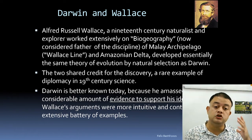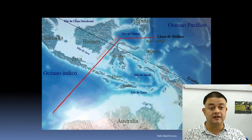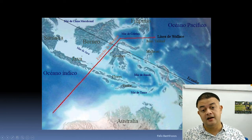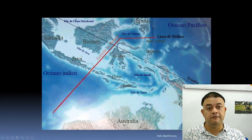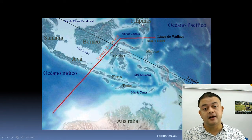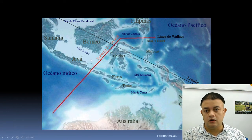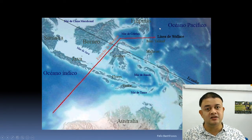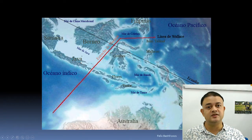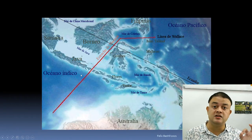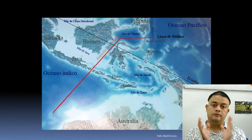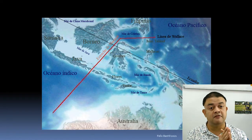Wallace's arguments were more intuitive and contained less extensive supporting examples. Looking at this map, you can see Australia and New Guinea, the Philippines, and around that area is the Wallace Line. The equatorial region here is the epicenter of marine species diversity — the world's richest marine species are found in this area, and whichever direction you go, marine species diversity keeps decreasing.